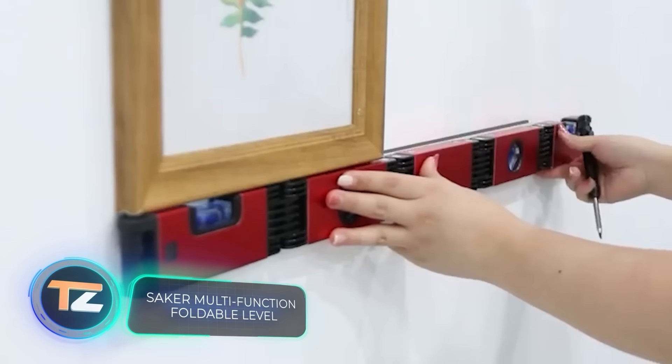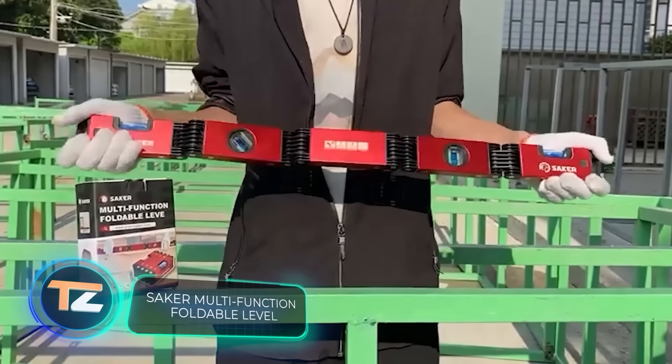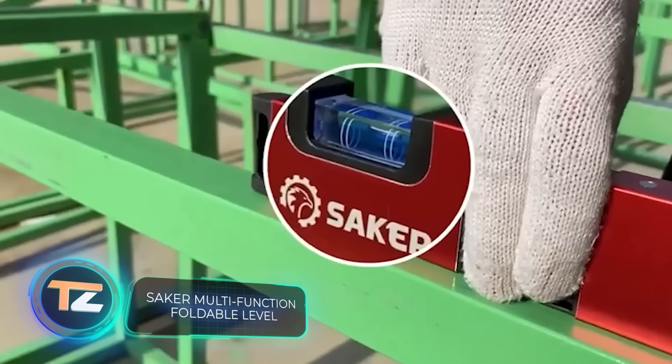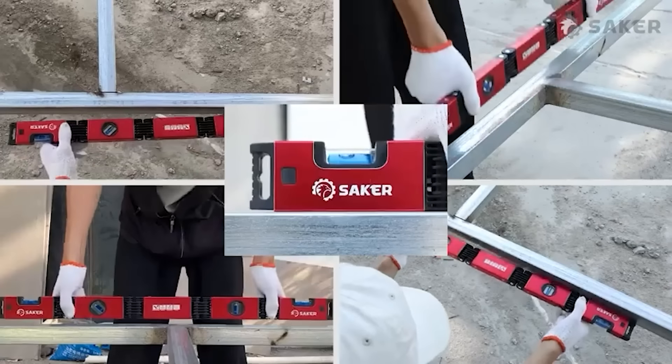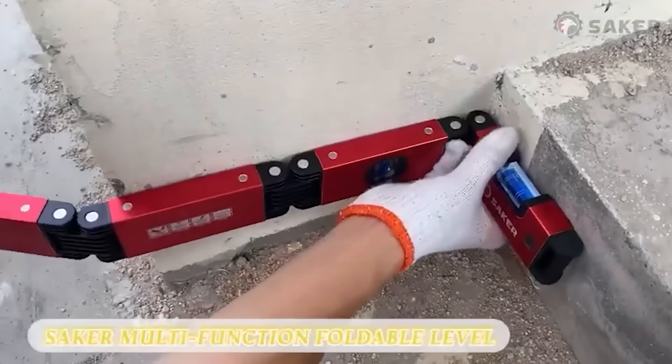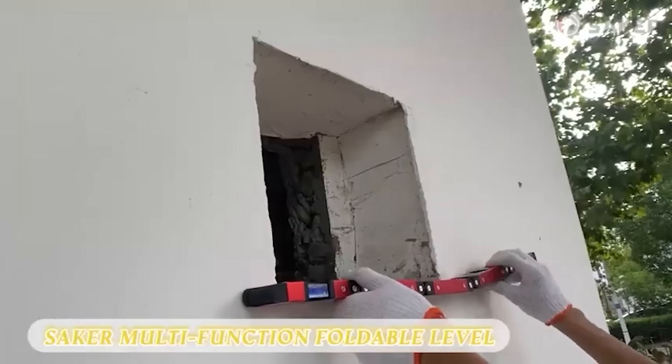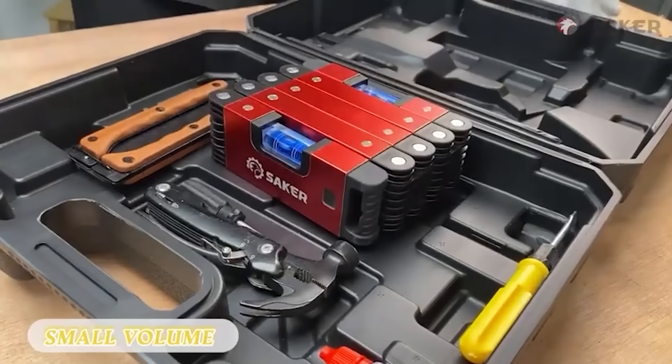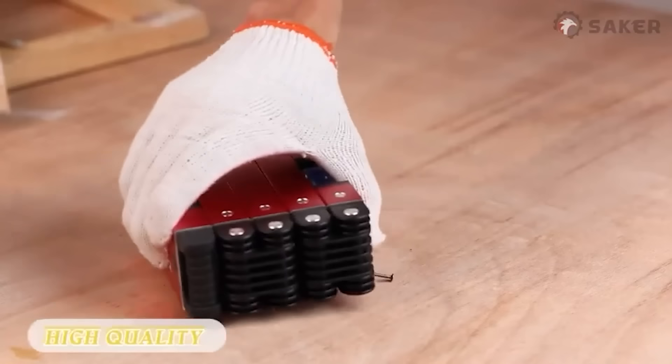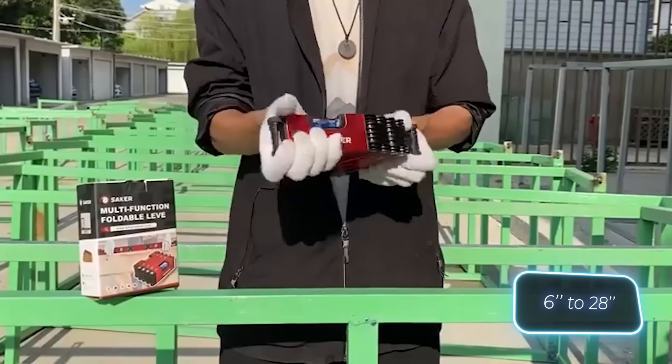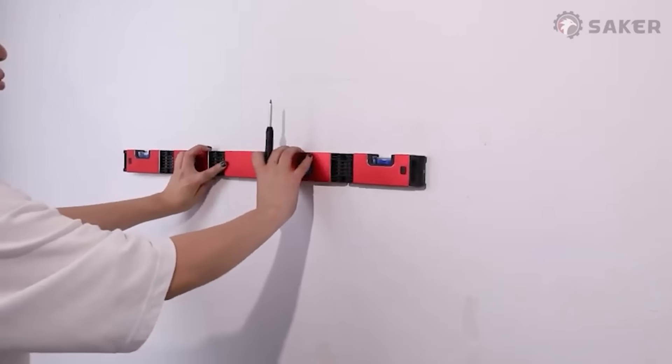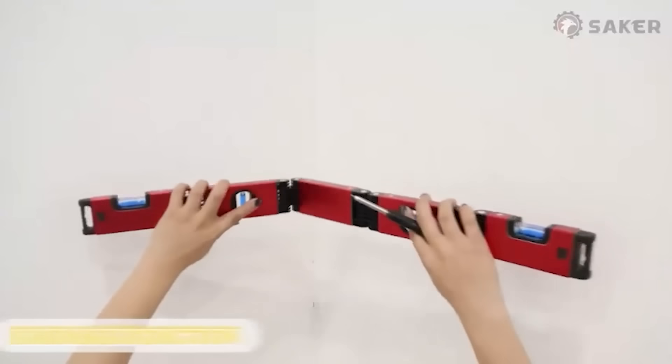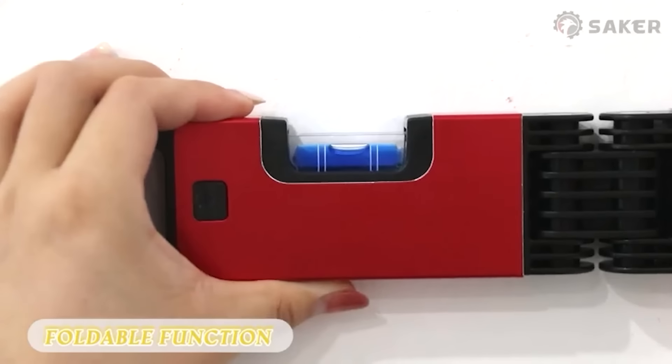An amazing fact: if you make an ordinary construction level long and foldable, you can sell it for $44. Aluminum profile, ABS plastic, thermoplastic rubber, and voila—this masterpiece of engineering is ready. It unfolds from 15 centimeters to 71, weighs 620 grams, and is equipped with four blue vials.